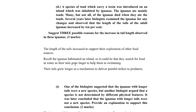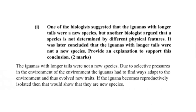Those iguanas with tails that could successfully kill or ward off predators could pass on their traits. One of the biologists suggests that the iguanas with longer tails were a new species, but another biologist argued that species is not determined by different physical features. It was later concluded that the iguanas with longer tails were not a new species. Indeed, the iguanas with longer tails were not a new species, because due to selective pressures in the environment, iguanas had to find ways to adapt and thus evolve new traits.